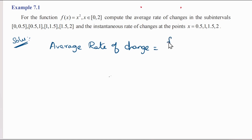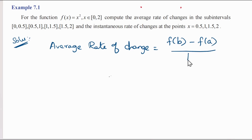The formula for average rate of change is: final value minus initial value divided by b minus a, that is f(b) minus f(a) divided by b minus a.